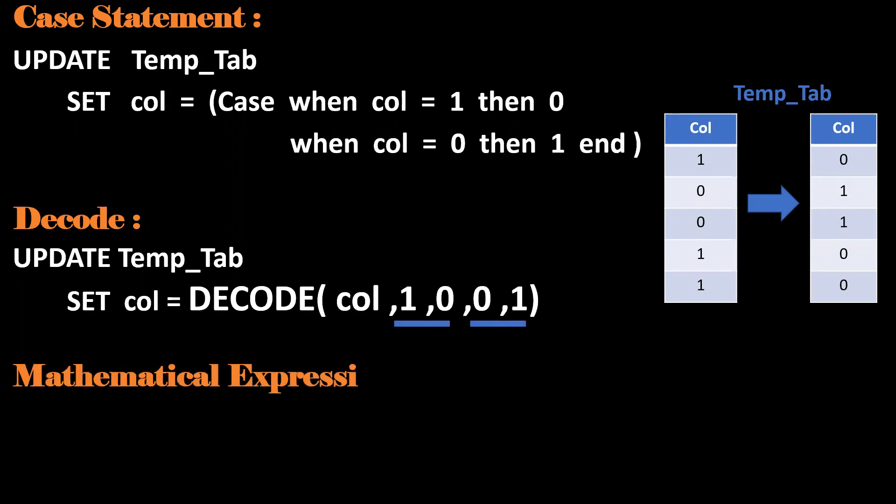Next one is the mathematical expression. Consider the first record in the temp table. First record is 1, so 1 minus 1 is 0. Next record, 1 minus 0 is 1. So required output can be achieved by using simple mathematical expression.